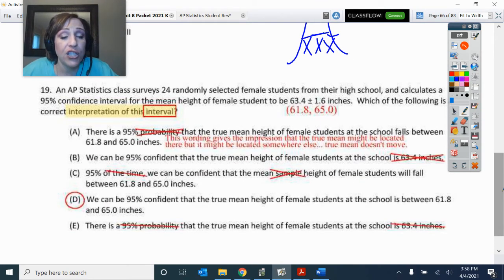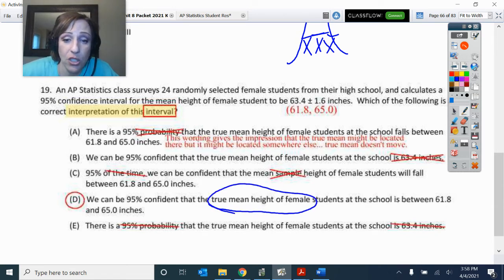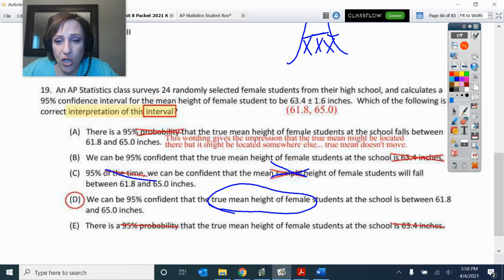Number 19. So interpretation of the interval has those numbers in it. Interval would have the numbers 61.8 to 65. So I'm 95% confident that the true mean, the population amount. Look, not the sample amount and you can't say 95% of the time something's going to happen. So the only one that fit here was D. A is close. A is close, but between A and D, D is better.